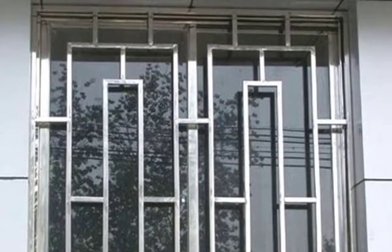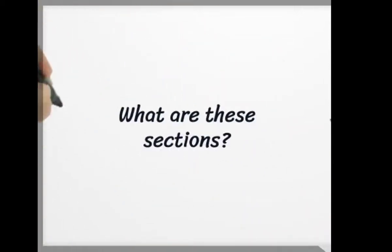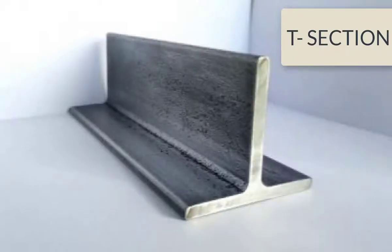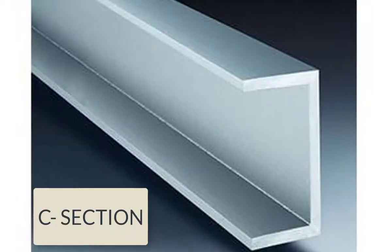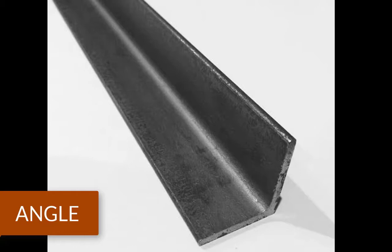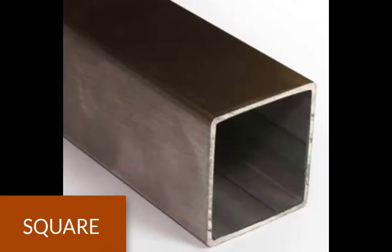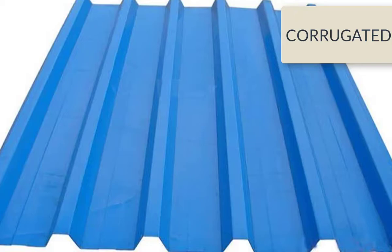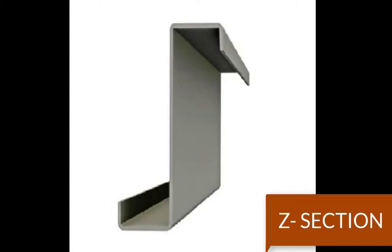The common steel sections that are widely used are the I section, the T section, the C section, the angle section, the square section, the round section, the corrugated section, and finally the zed section.